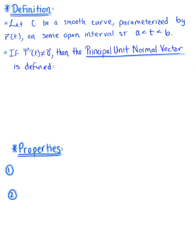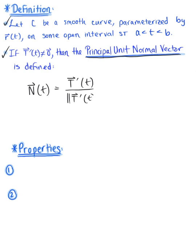Here is the formal definition for the principal unit normal vector. Let C be a smooth curve parametrized by the vector-valued function R of t on an open interval where t is between scalars a and b. If the derivative of the unit tangent vector does not equal the zero vector, then the principal unit normal vector capital N is defined as the derivative of the unit tangent vector divided by the magnitude of the derivative of the unit tangent vector.